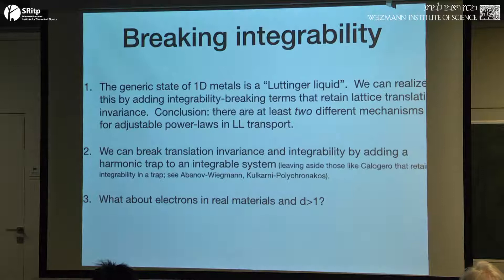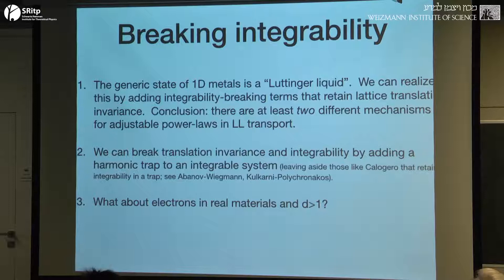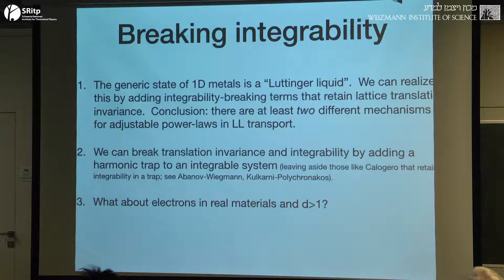First, 1D. One reason why we care about one-dimensional systems is they famously violate the standard wisdom that metals are Fermi liquids. So if you're in higher dimensions, above one, and you add repulsive interactions between the electrons, we think, going back to Landau, that usually the picture is pretty stable. You no longer have a Fermi gas. You have renormalizations of the electron effective mass and other things. But your basic picture of the excitations is still okay. Now you have an electron that's dressed by some particle-hole pairs, and that's the Fermi liquid. In 1D, we think that's not true.